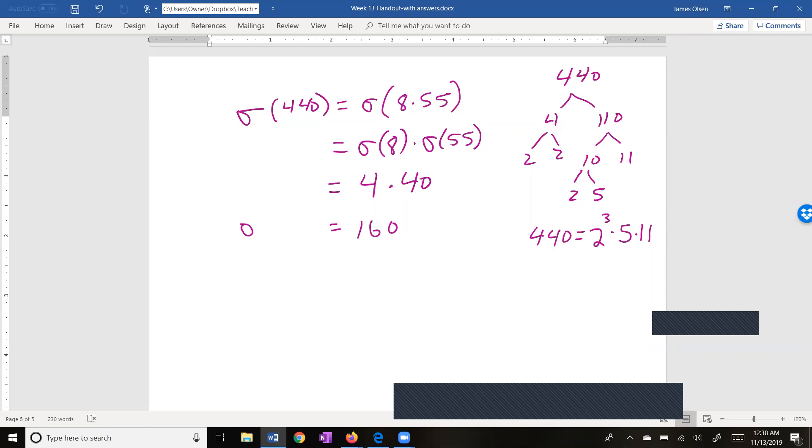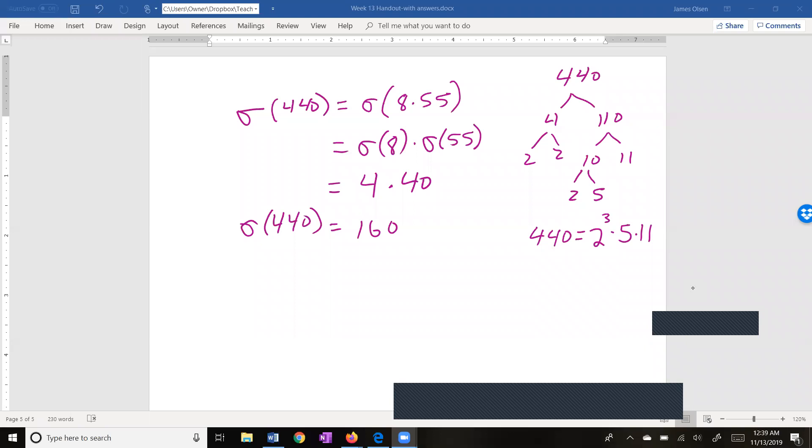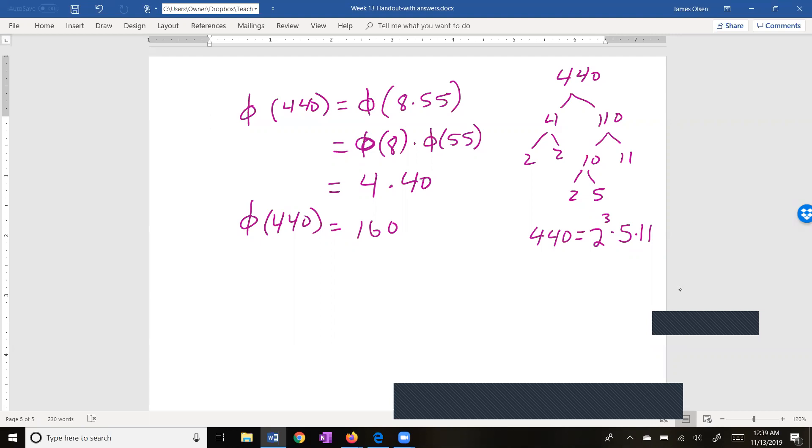So phi of 440. I'm sorry, sigma. Now wait a second. I messed up here. I had intended for this first example to be phi. So let's change our sigmas to phi's and it'll be correct. So let me get my eraser here. Okay, now I have corrected this. My intention was to do phi. So phi of 8 is 4, phi of 55 is 40. So therefore, phi of 440 is 160.